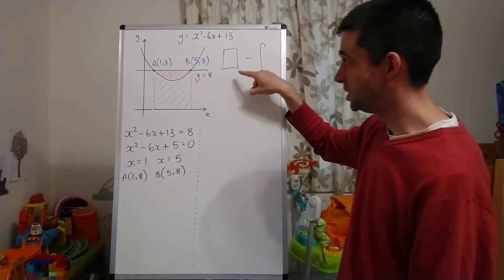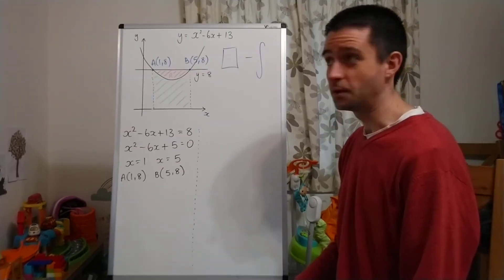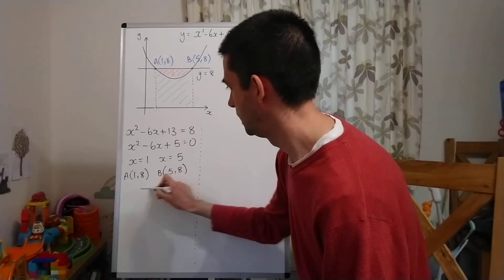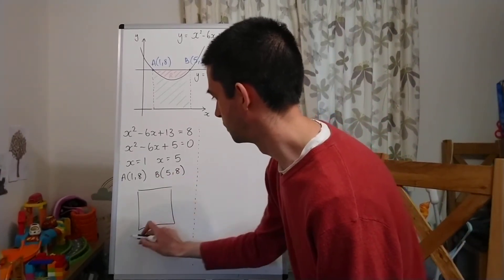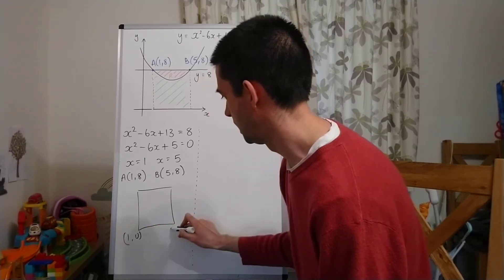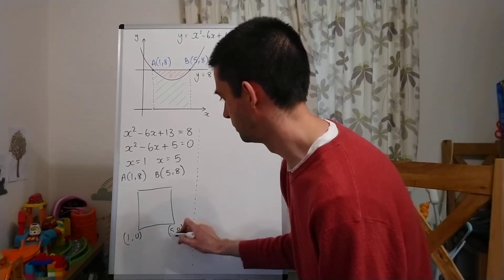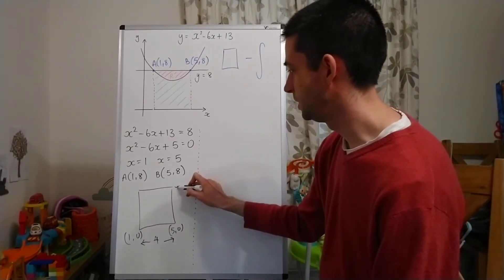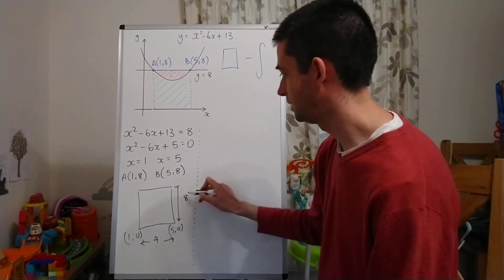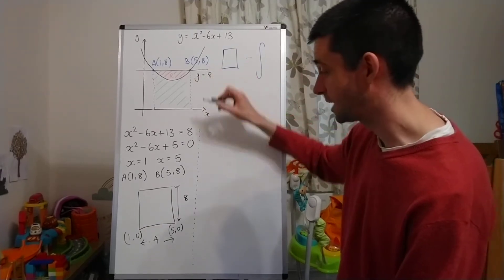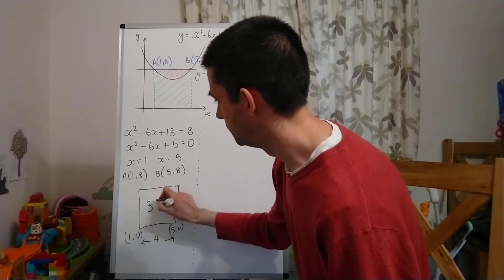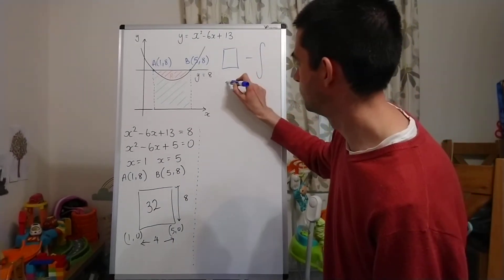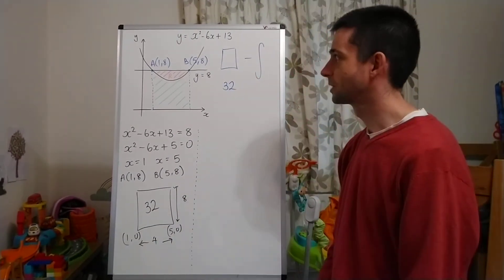That enables me to find the area of this rectangle. The rectangle goes from the point (1, 0) to (5, 0) along the bottom, so it must have a base of 4. The height we know is 8, because that's how far it goes up on the y-axis. So the area of this rectangle must be 32.